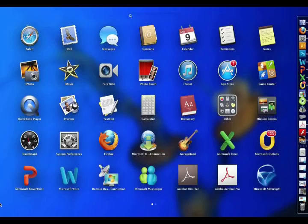They have segmentation: head, thorax, and abdomen — you'll want to know those three parts. The head is the most anterior, and that's where the antennae are if they have them. The thorax is the next section — you might be familiar with thoracic cavities where your lungs are, or the T vertebrae. Then the abdomen: what we sometimes think of as the 'tail' part is actually the abdomen. Like a crawfish or a lobster — that's all the abdomen.